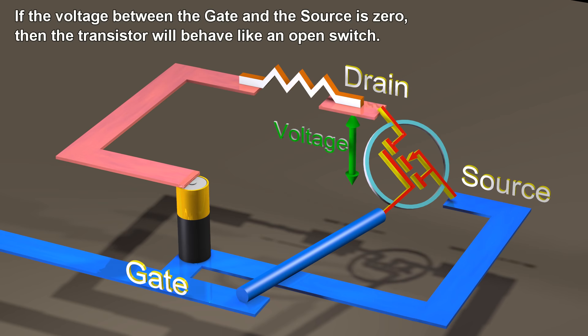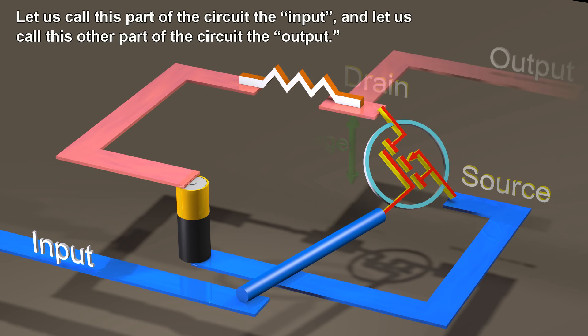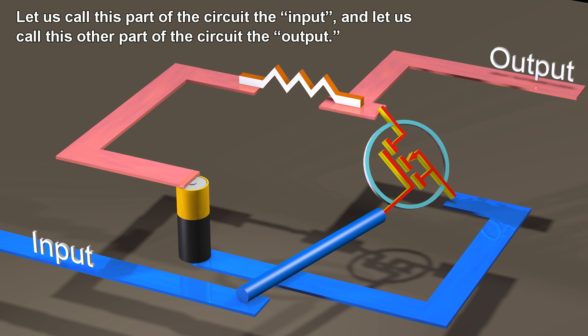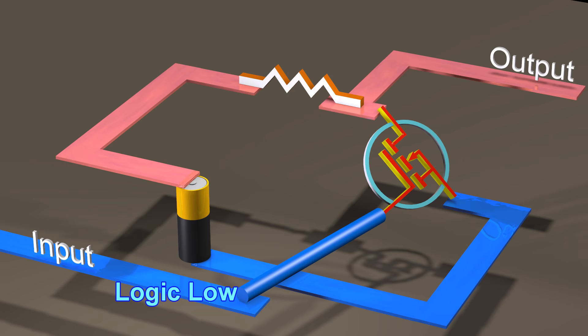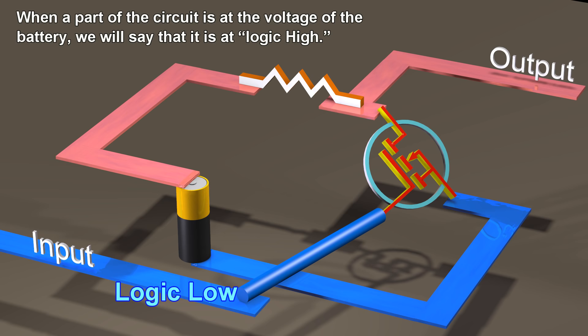Let us call this part of the circuit the input, and let us call this other part of the circuit the output. When a part of the circuit is at zero volts, we will say that it is at logic low. When a part of the circuit is at the voltage of the battery, we will say that it is at logic high.